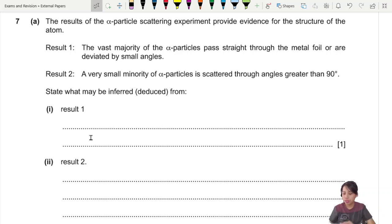This is a particle and nuclear physics chapter where you have an alpha particle scattering experiment. So they have two results that you observe from the experiment. Result 1: Most particles pass through metal foil or are deviated by small angles.